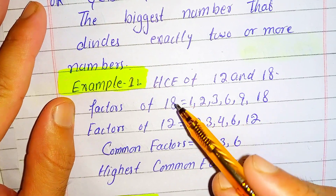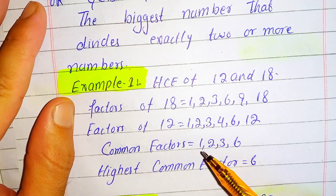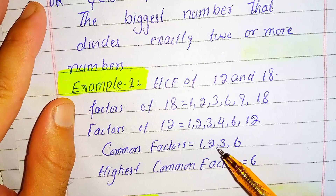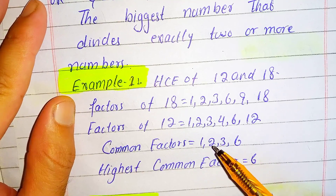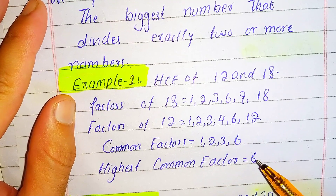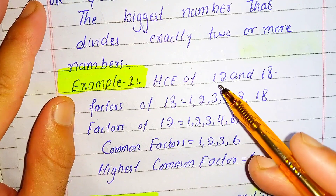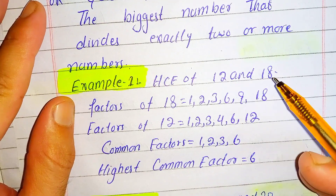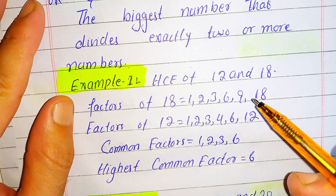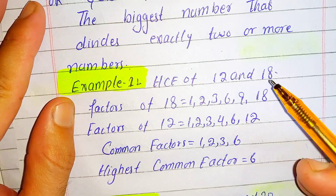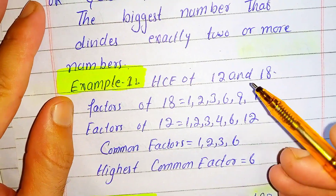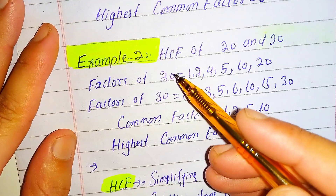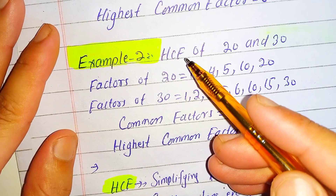Now we find the common factors of 18 and 12: they are 1, 2, 3, and 6. The highest among these common factors is 6. So the HCF of 12 and 18 is 6, because 6 is the greatest number that divides both 12 and 18, and there is no greater number than 6 that divides both.